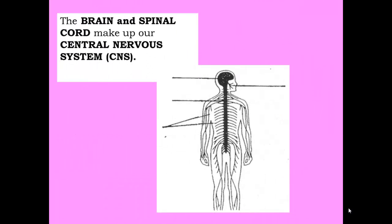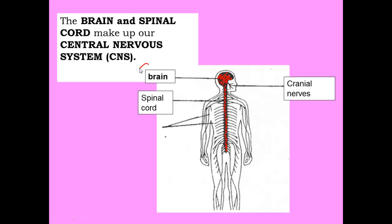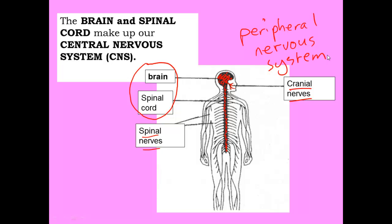Our nervous system has one main division: between the central nervous system and the peripheral nervous system. The brain and spinal cord make up our central nervous system — abbreviated as CNS. Separate to that, we have the spinal nerves coming out of the spine and the cranial nerves coming from the brain, penetrating out of the skull or cranium. The spinal nerves and cranial nerves together form the peripheral nervous system, abbreviated as PNS.